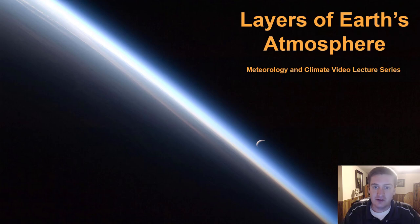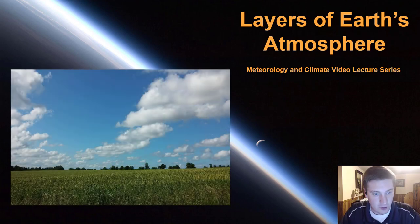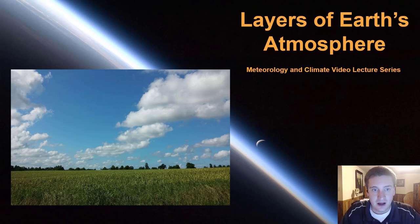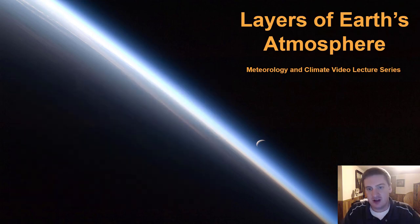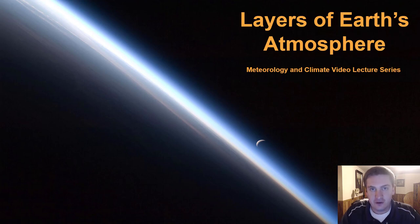When you look at the atmosphere from the surface — imagine we're walking through a field, we look up in the sky on a normal sunny day — you'd probably see the blue skies, the clouds, maybe an airplane or two. However, Earth's atmosphere is a complex and layered system with each layer serving its own important function. This image was taken by the International Space Station and here you can actually see the individual layers of Earth's atmosphere. In this video we're going to be breaking these down individually.